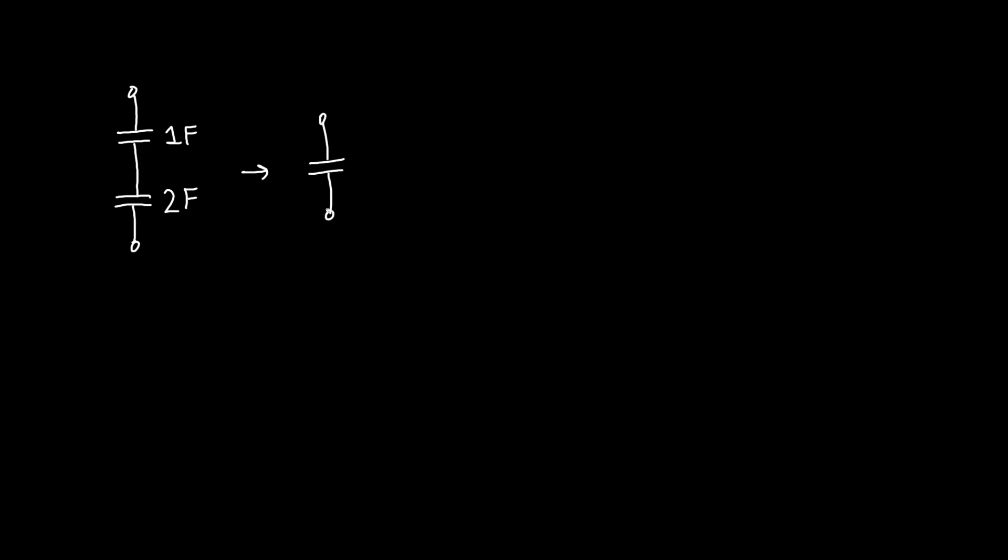Well, we can still use our trusty formula. One over the equivalent capacitance is one over C1 plus one over C2. And I'm hoping that this is getting drilled into your brain by now. So I'm going to call this C1 and this C2, but you could have... Actually, let's do the opposite so you're comfortable with both. Let's call this C1 and this C2.